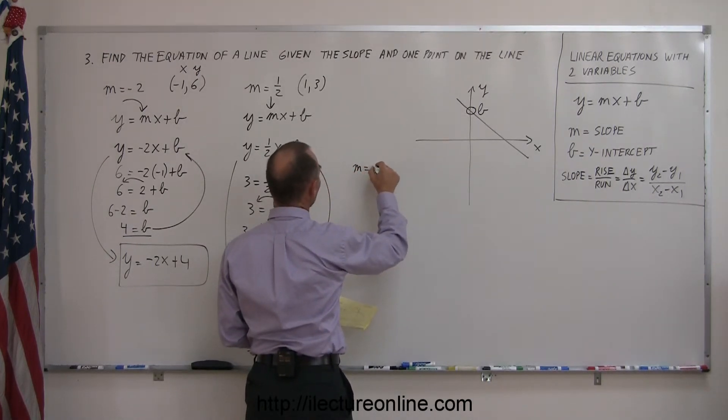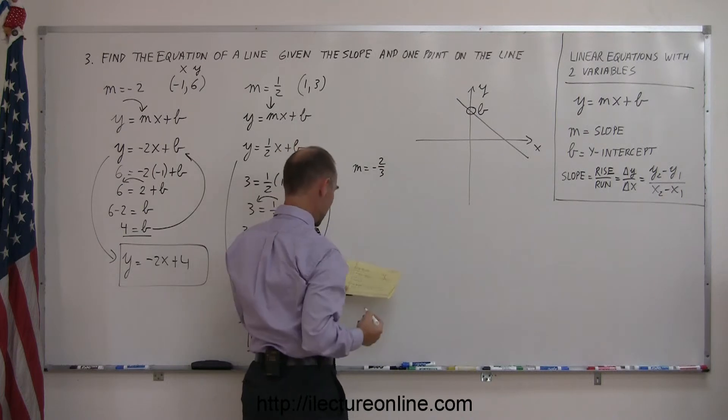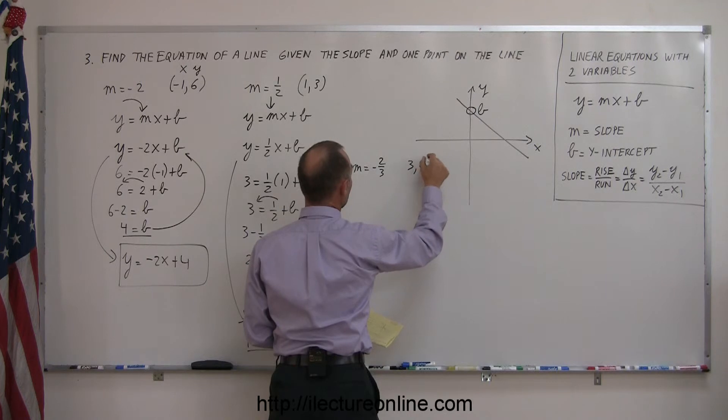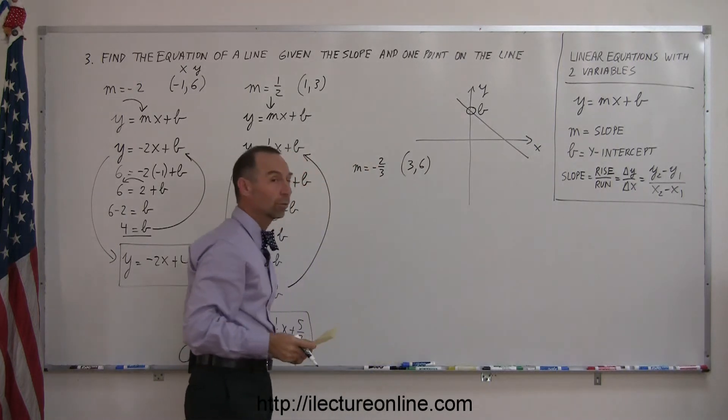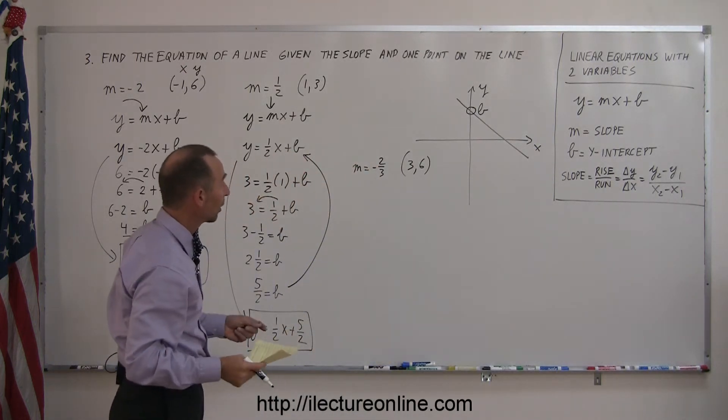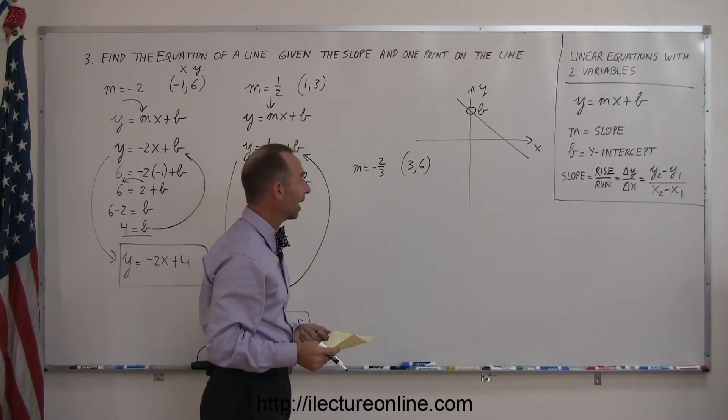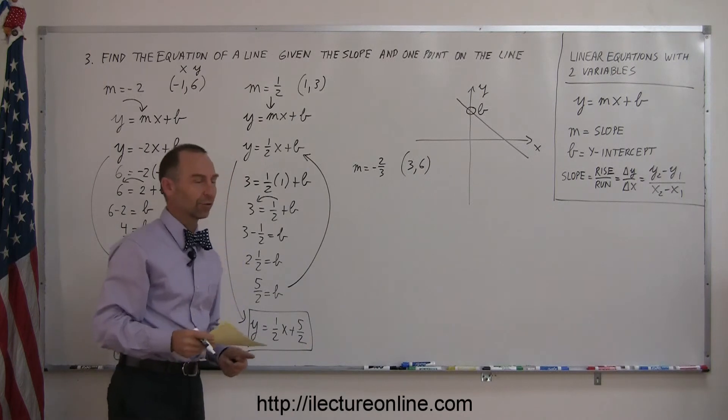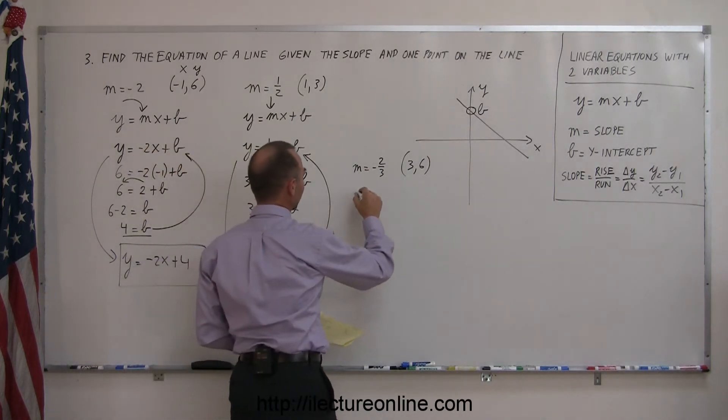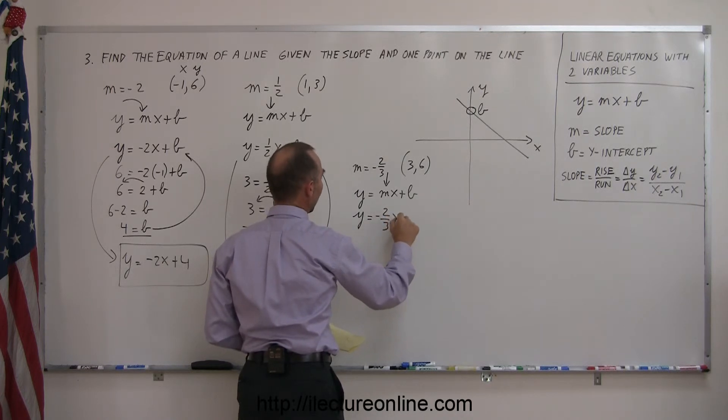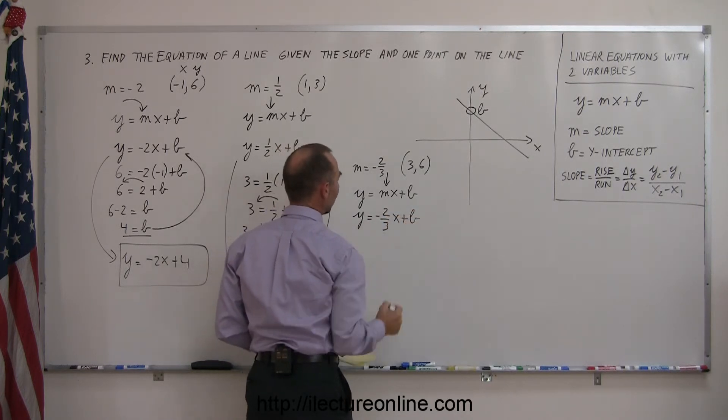So we have, let's say, m equals minus 2 thirds, and the point 3 and 6. So you're looking for a line, or an equation representing a line, where the slope is minus 2 thirds, and a point on the line is x equals 3, y equals 6. You know the equation has to look like this, y equals mx plus b, and right away say, I know what my slope is, I'll plug it in here, so we have y equals minus 2 thirds x plus b. So the only thing left to do now is to find b, the y-intercept.